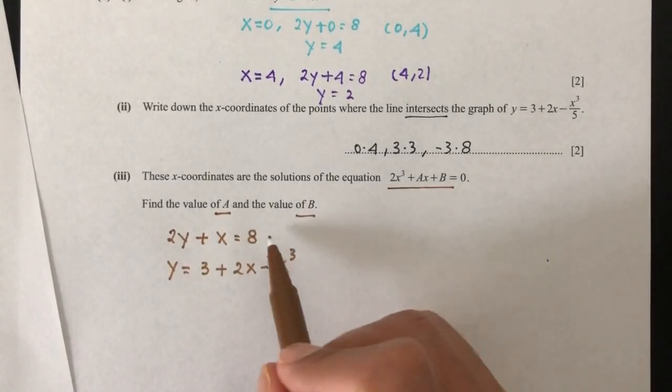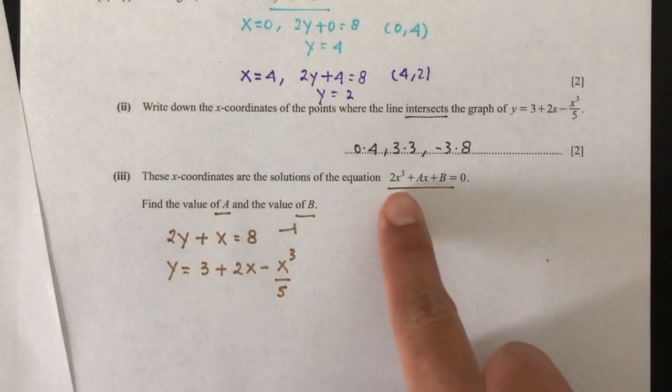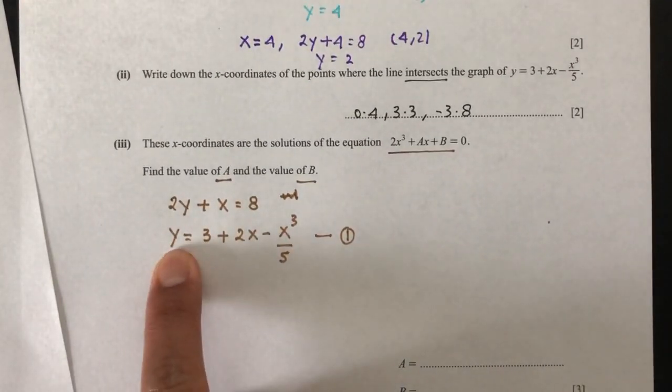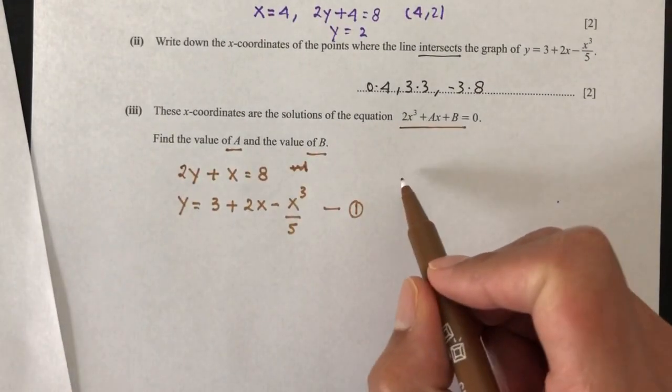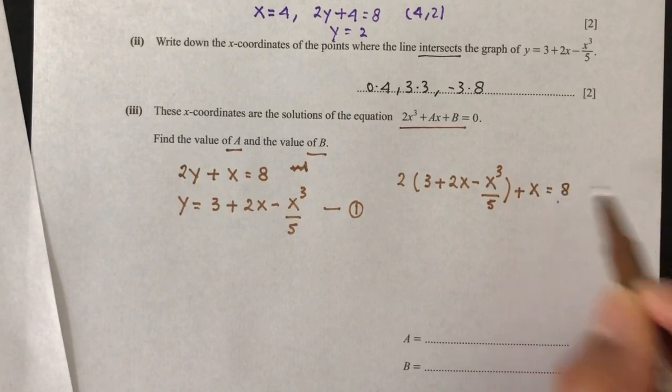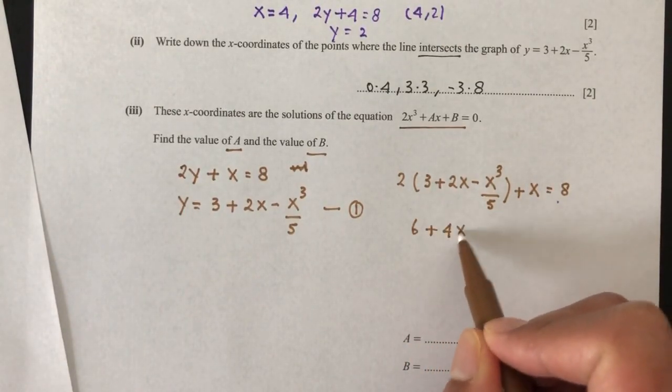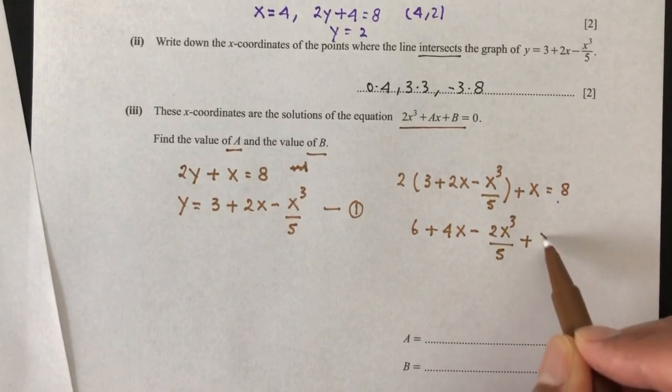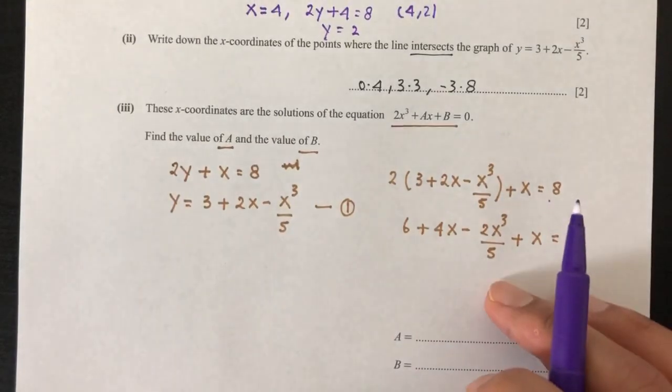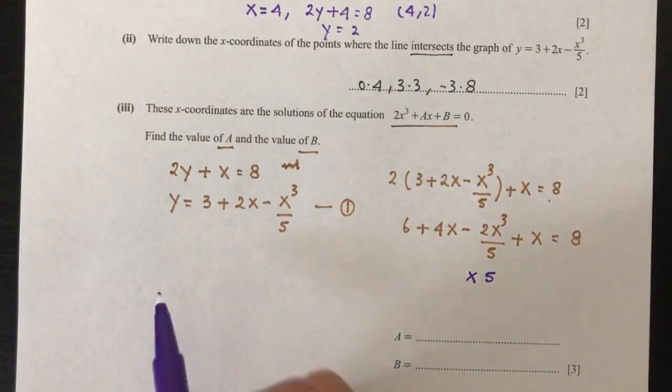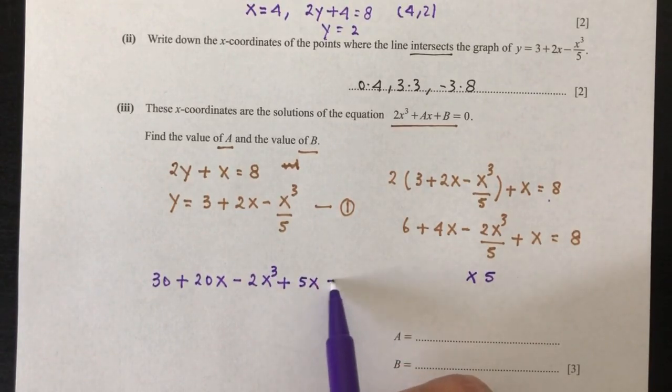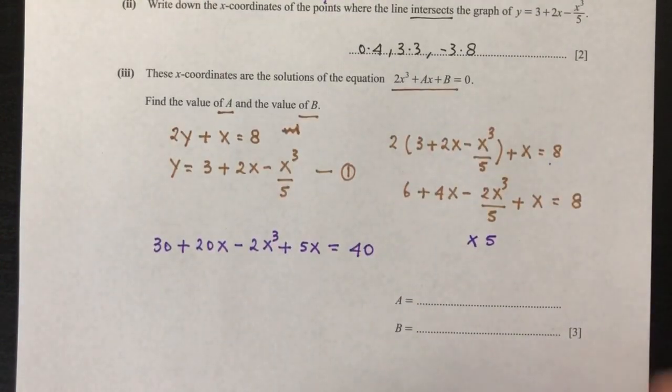So my first equation will be 2y plus x equal to 8, and then I have y equal to 3 plus 2x minus x cubed over 5. We can make x become the subject of formula if you want to, but that will not be useful because here we need to find in terms of x. So let's make y become the subject of formula. This is my equation number 1. So let's replace y by this value in this one. You will have 2 times y, which is 3 plus 2x minus x cubed over 5 plus x equal to 8. Now we have to expand. That will be 6 plus 4x minus 2x cubed over 5 plus x equal to 8. Now the next step is, as you can see, the denominator is 5. We can multiply by 5 everywhere to remove this denominator. So multiply by 5 everywhere. You will have 30 plus 20x minus 2x cubed plus 5x equal to 40.